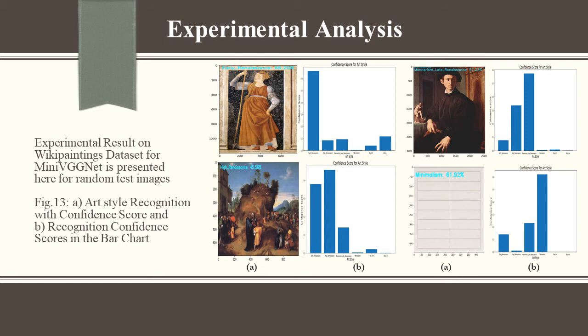Experimental results on the WikiPaintings dataset for MiniVGNet are presented here for random test images. Figure 13 shows art style recognition with confidence scores and recognition confidence scores displayed in a bar chart.